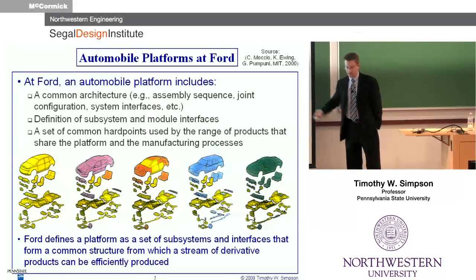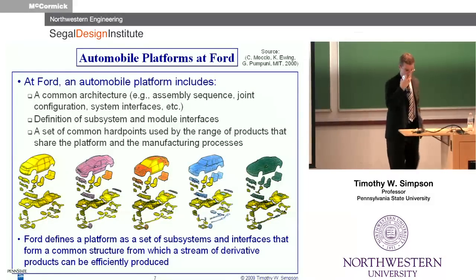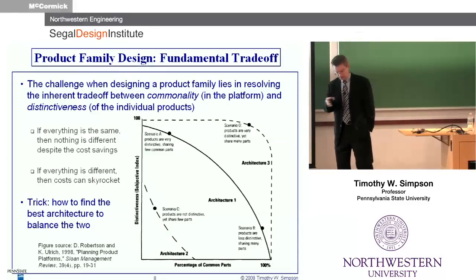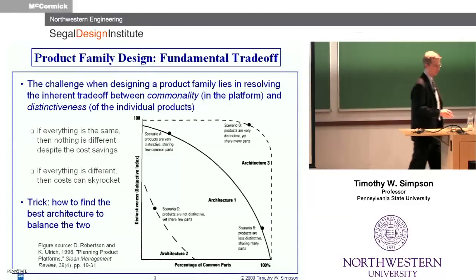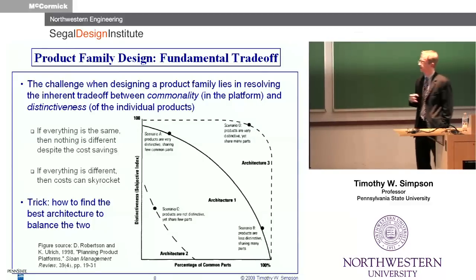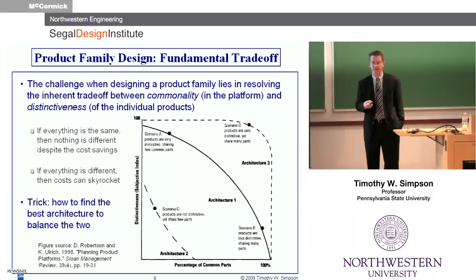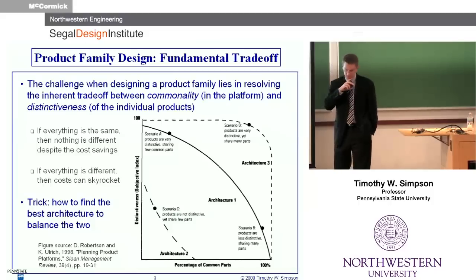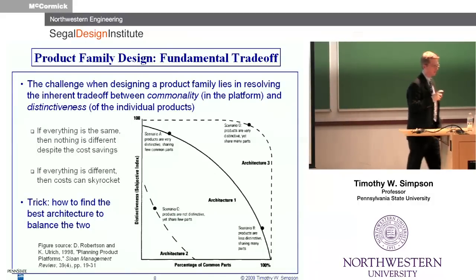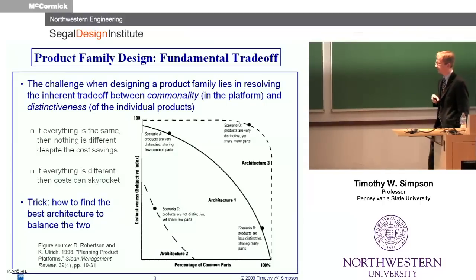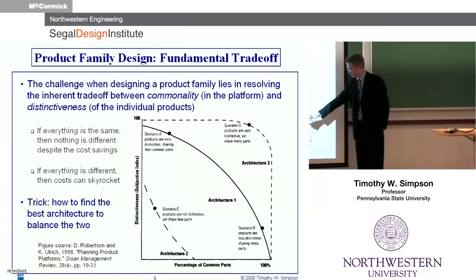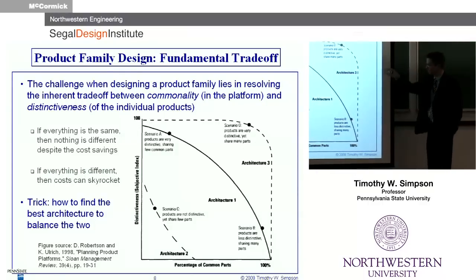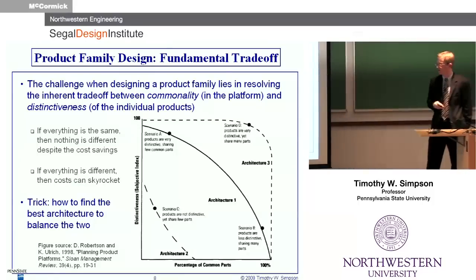They've actually been leveraging this further, trying to extend it into creating global platforms as well. Really then the crux — as you can see in some of these examples — and the challenge when creating a family of products, is trying to balance commonality with distinctiveness. A couple of figures from a great paper by Dave Robertson and Karl Ulrich from 1998 about planning product platforms. I like this chart because it very succinctly shows this trade-off: commonality on one axis, distinctiveness on the vertical axis in terms of performance.